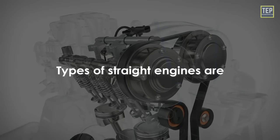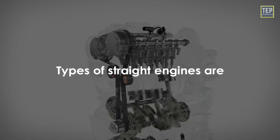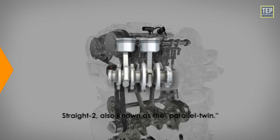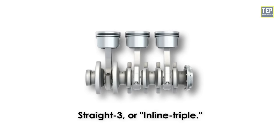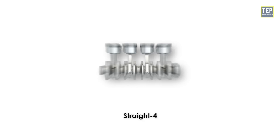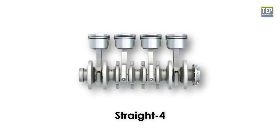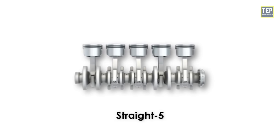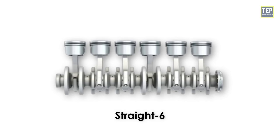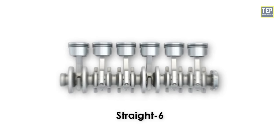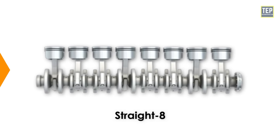The different types of straight engines are: straight two, also known as the parallel twin; straight three, or inline triple; straight four; straight five; straight six; and straight eight.